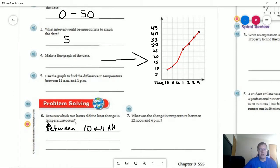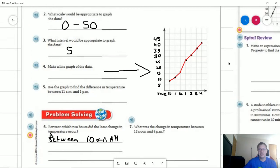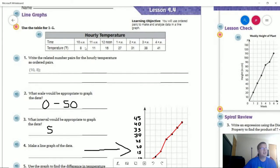Number six, which two hours did the least change occur during between 10 and 11 a.m. going back up to our chart? They went from only eight degrees to 11 and three degrees change is our smallest.